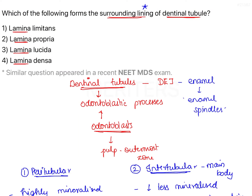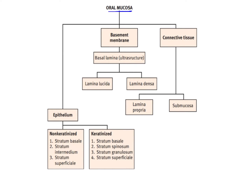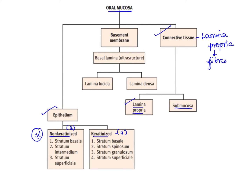Now we are aware of the term lamina limitans present in the lining of dentinal tubules. Let's discuss the other terms. The oral mucosal membrane consists of epithelium and underlying connective tissue. Epithelium is of two types: non-keratinized and keratinized. The underlying connective tissue is made up of lamina propria and submucosa. Lamina propria denotes the connective tissue — it is rich in fibers, contains fibroblasts, mast cells, macrophages, and ground substance.